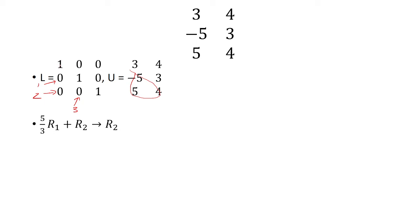Because this column has a 1, you want to work with the first row. So what we do is take 5 thirds row 1 add it to row 2. That's going to be my new row 2.